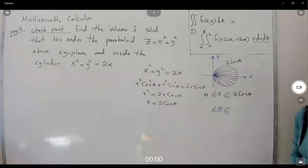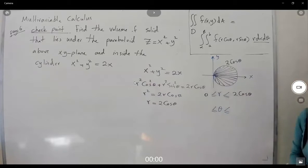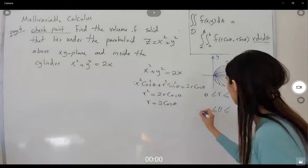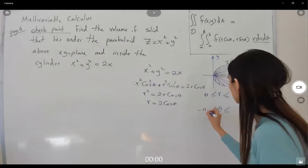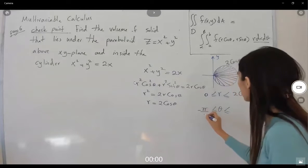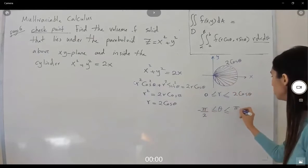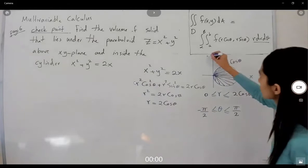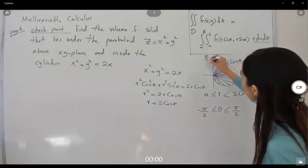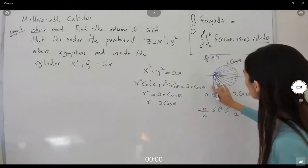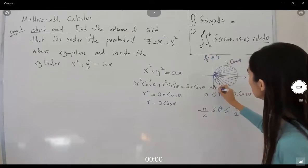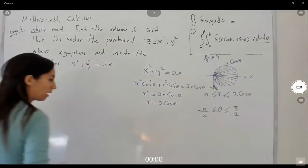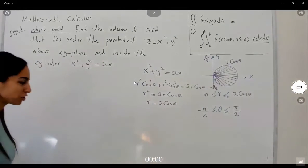How about theta? Your angle ranges between negative pi over 2 and pi over 2. So remember that you have pi over 2 and minus pi over 2. Now we have all the information we need.